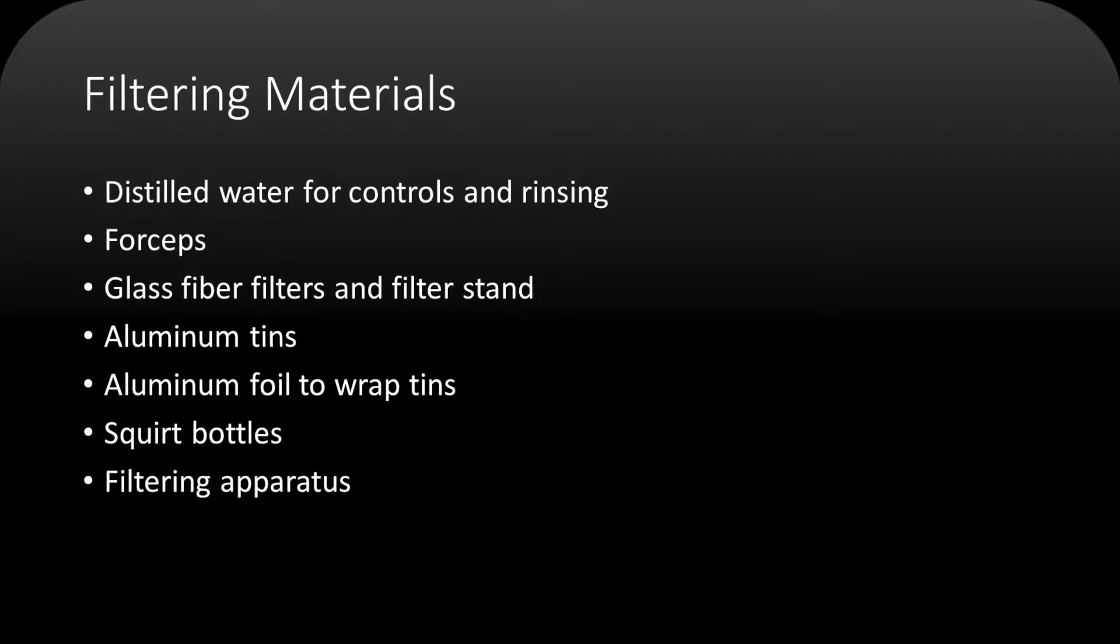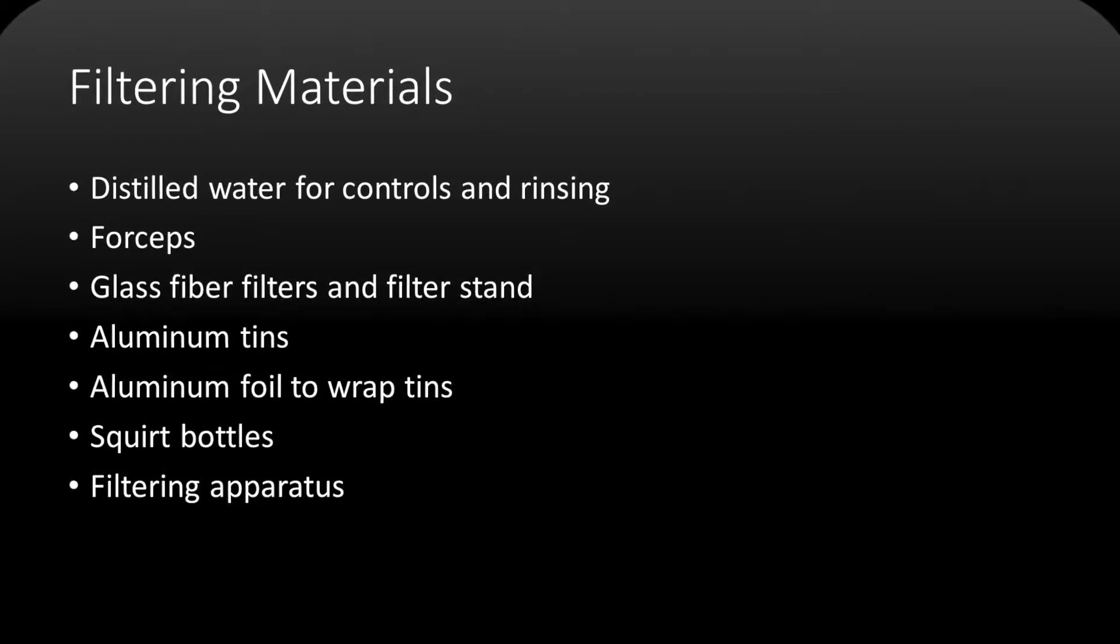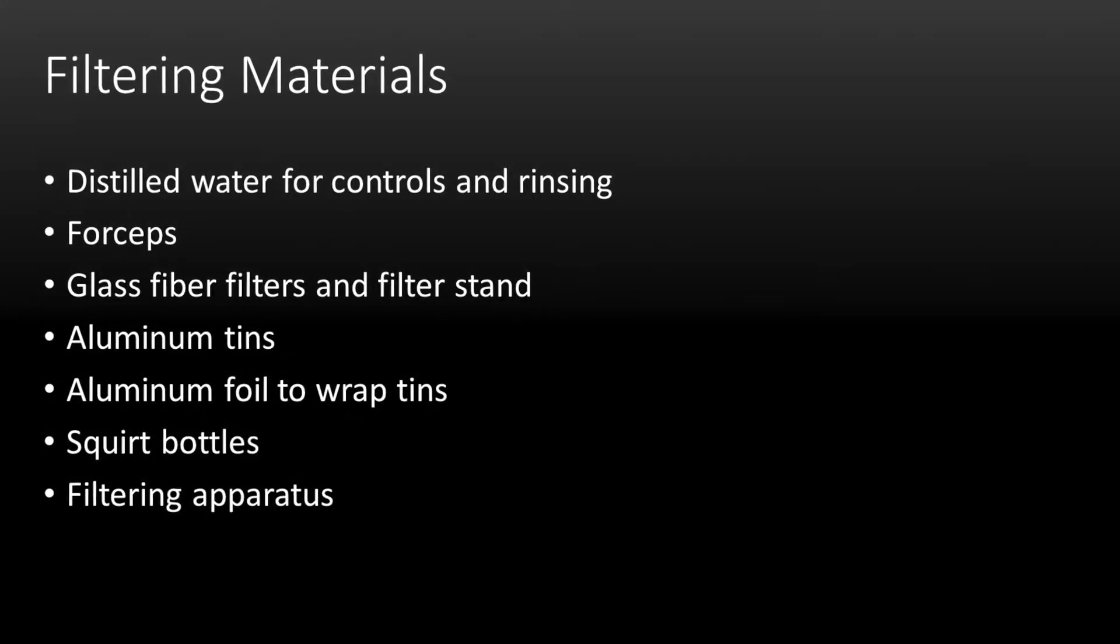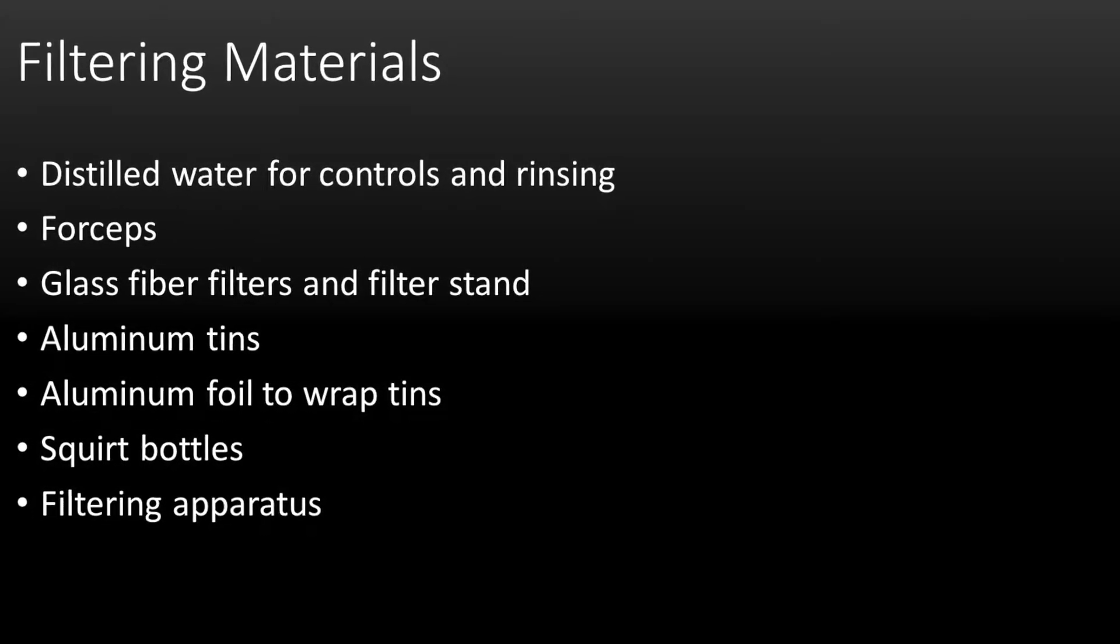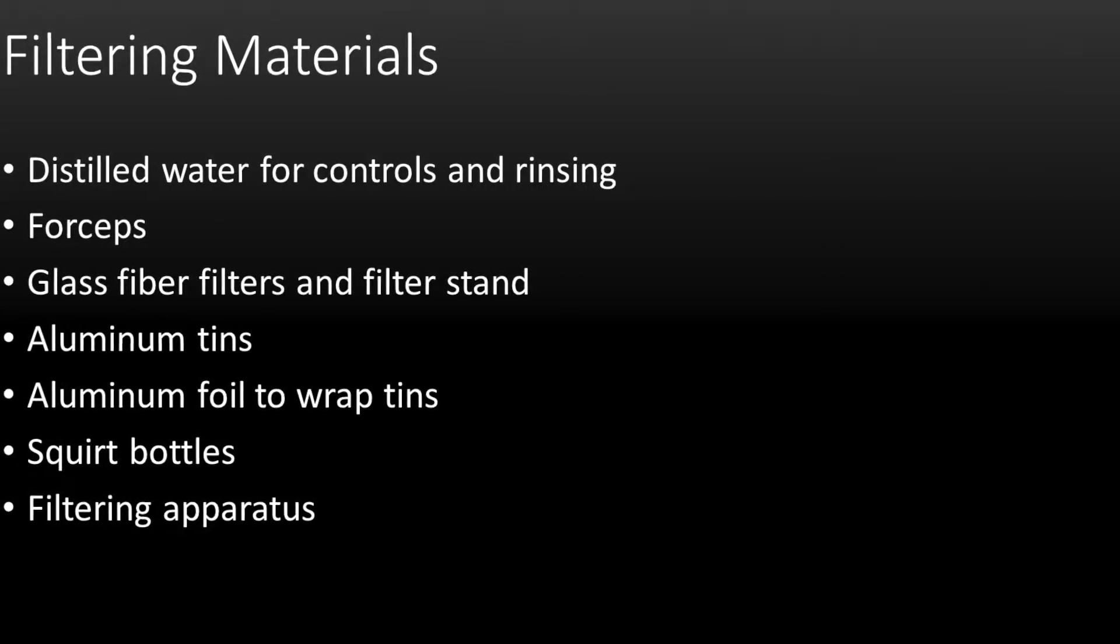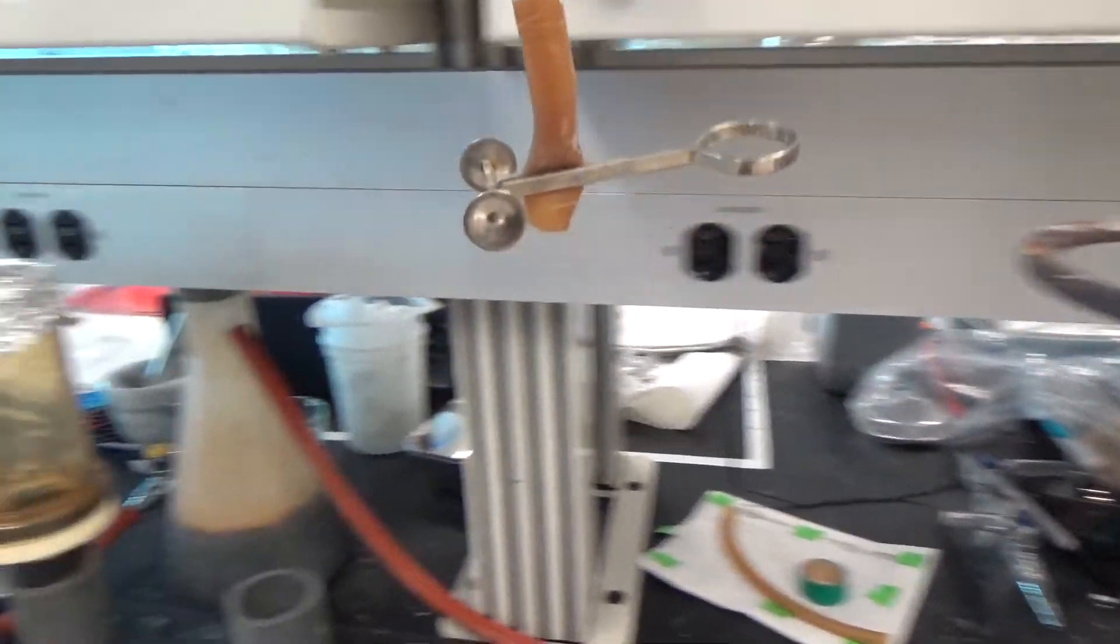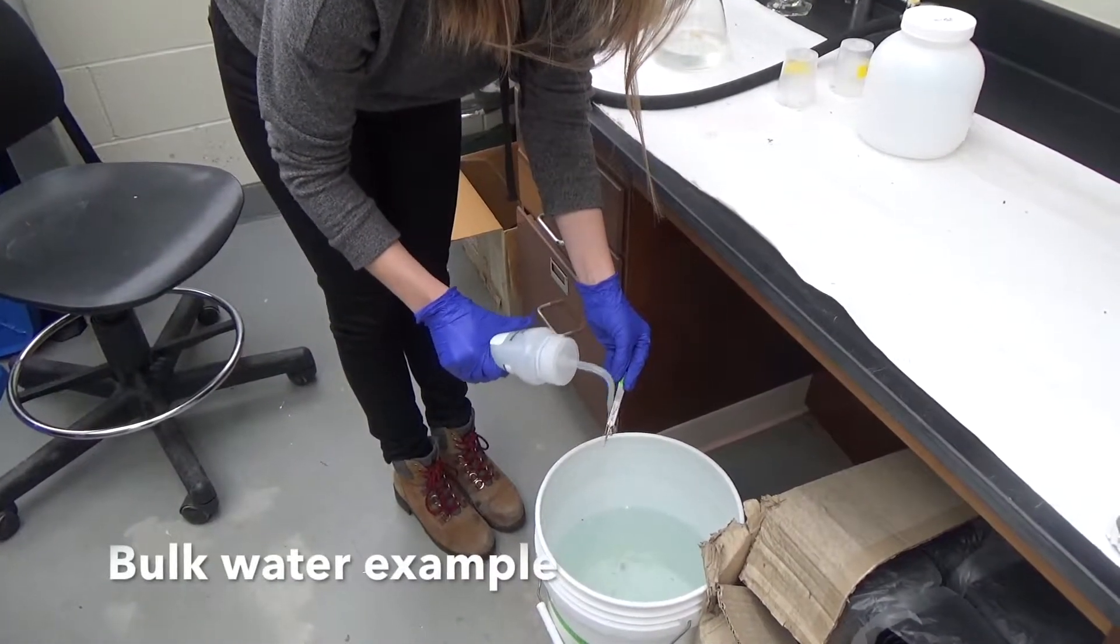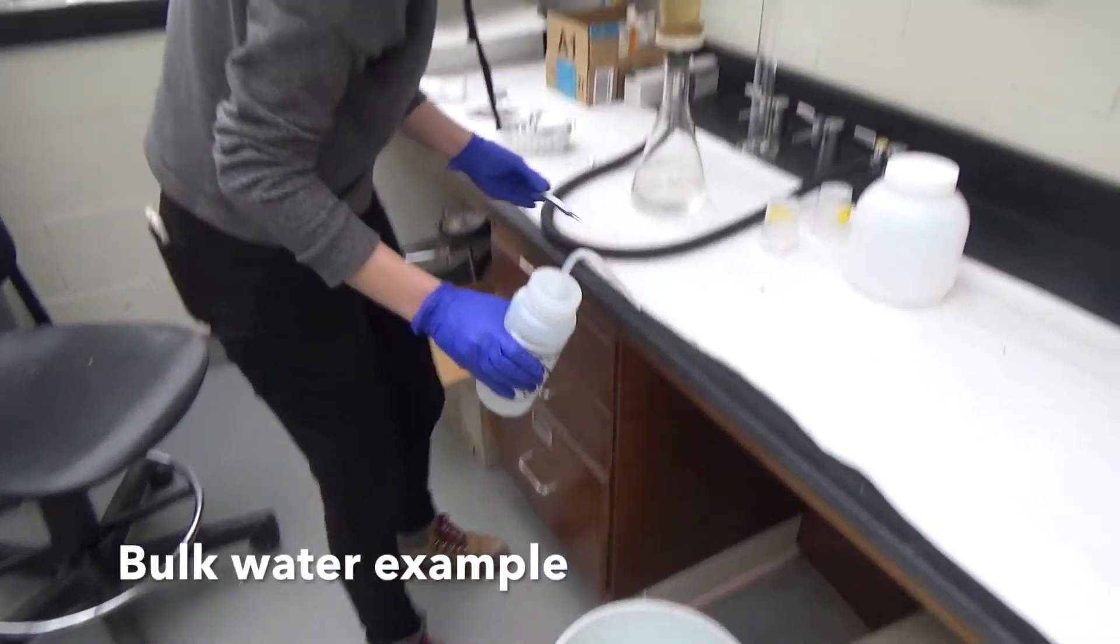For filtering, you'll need distilled water for your controls and rinsing, forceps, glass fiber filters and a filter stand, aluminum tins, aluminum foil to wrap the tins, and squirt bottles, as well as a filtering apparatus. If your sample was just digested, simply take this sample over to your filtering station. This example will be from a bulk water sample.